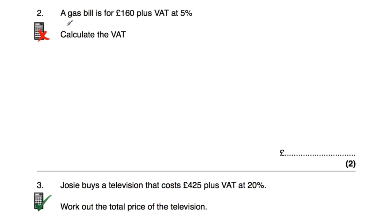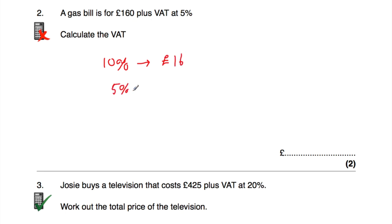Question two: a gas bill is for £160 plus VAT of 5%. Calculate the VAT. We just need 5% of £160. First, 10% of £160 is £16 (divide by 10). Then 5% is half of that: half of £16 is £8. So 5% of £160 is £8, and the VAT is £8.